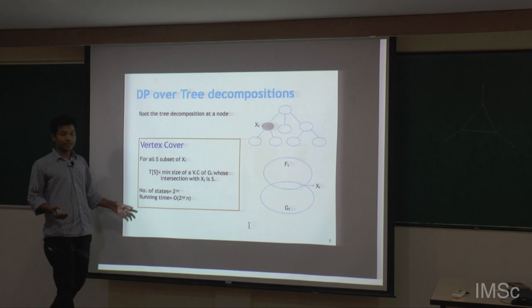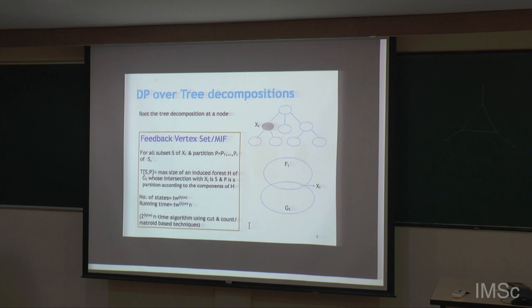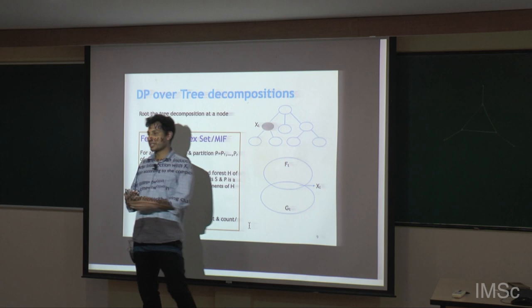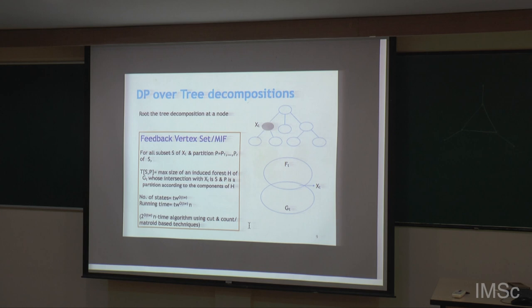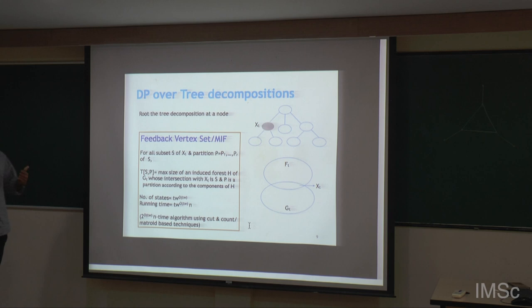We get something like 2^{tree width} · N algorithm. For feedback vertex set, we think of it as a max-induced forest problem, and how the max-induced forest interacts with the boundary partitions that boundary into some number of parts. That gives a tree-width^{tree-width} algorithm, but there are sophisticated techniques using Matroid cut-and-count to get 2^{tree width} algorithms.